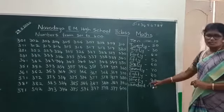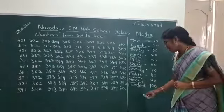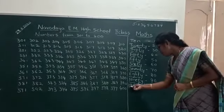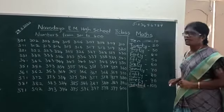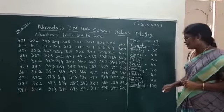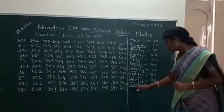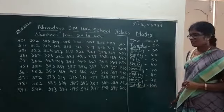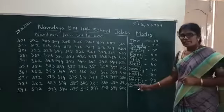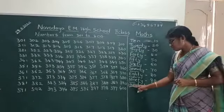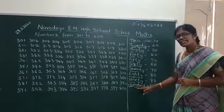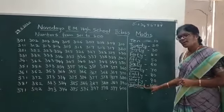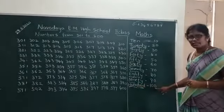This is the special number. 100. H-U-N-D-R-E-D. 100. H-U-N-D-R-E-D. 100. Again spelling of 100: H-U-N-D-R-E-D. H-U-N-D-R-E-D. 100.